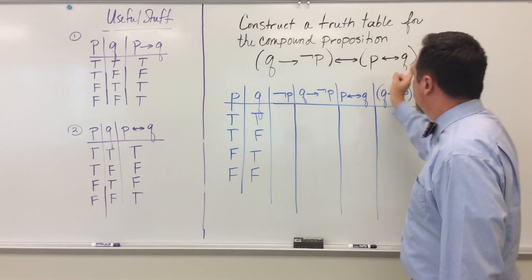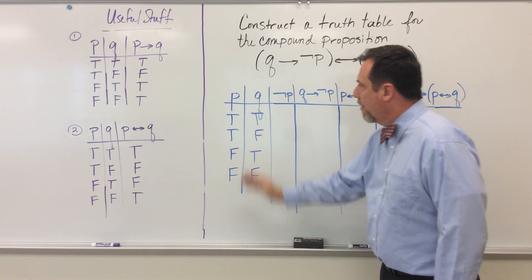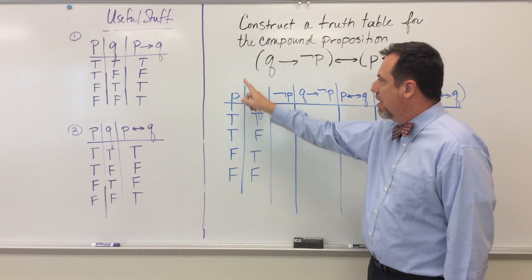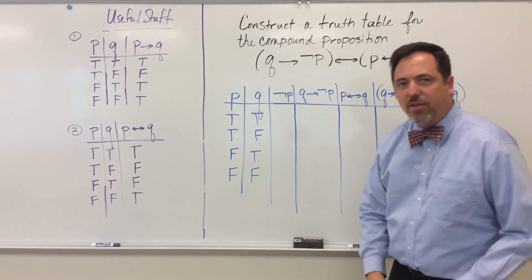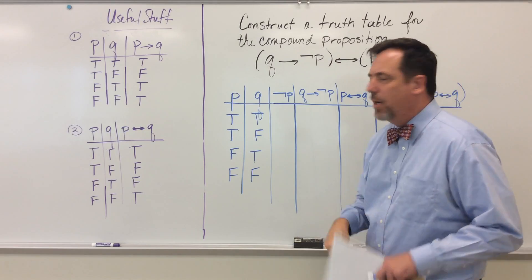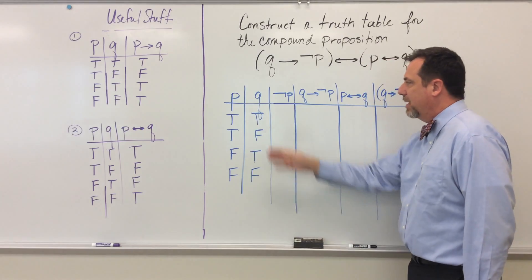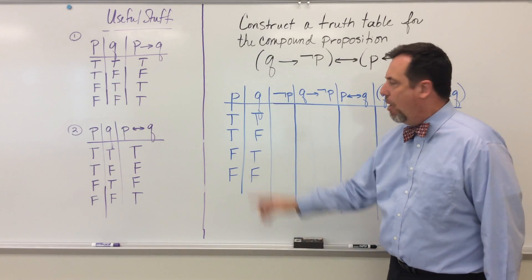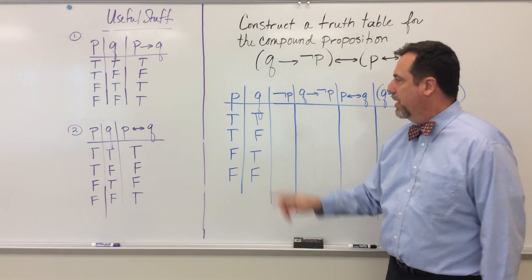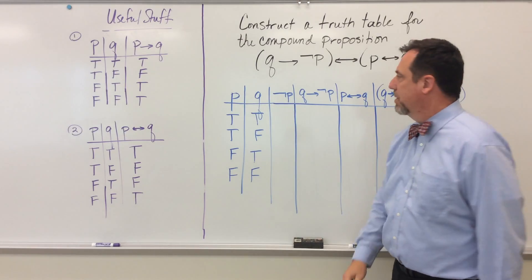We know that I only have P's and Q's in here. And so my first column and my second column are all the truth values for P and Q respectively. And I've written them out in such a way so that it's easy for me to check to make sure I've hit all the possible permutations of true and false.